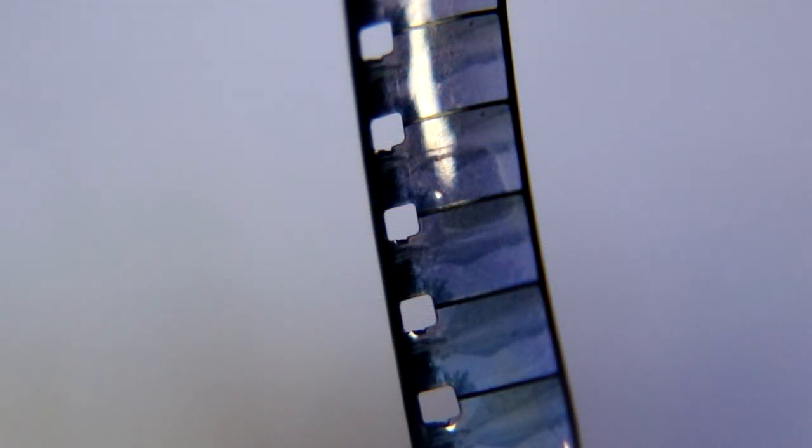As a general rule, 8mm film ages very well. However, in some specific storage circumstances, like being in a high heat, high humidity, and high salt environment, it has a tendency to make film brittle.